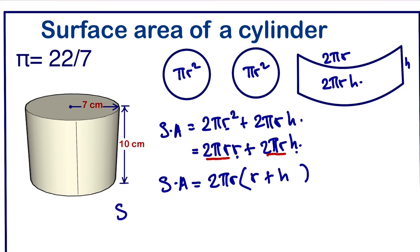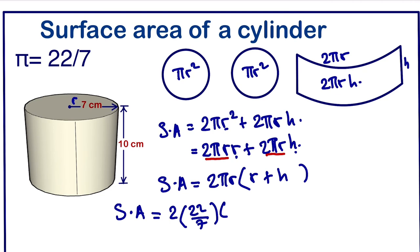Let's plug in the value to calculate the surface area. 2πr, we are going to have 2 times π. π is 22 over 7. And r, the radius is 7. Bracket r, 7 plus the height is 10.